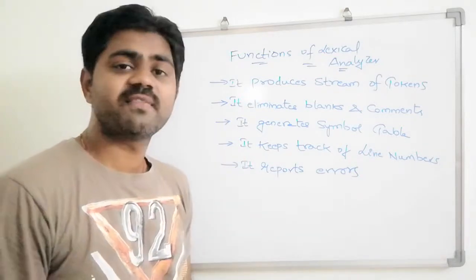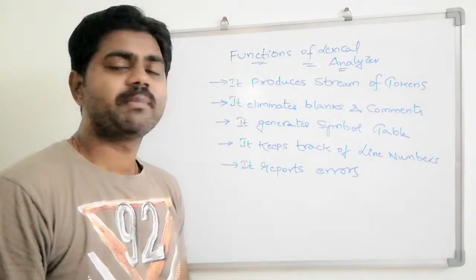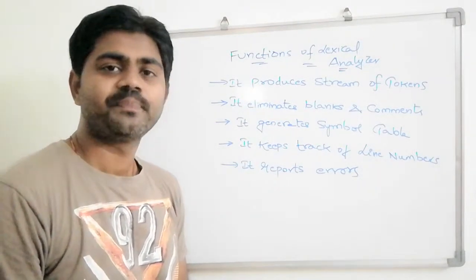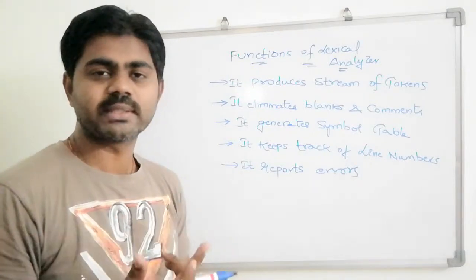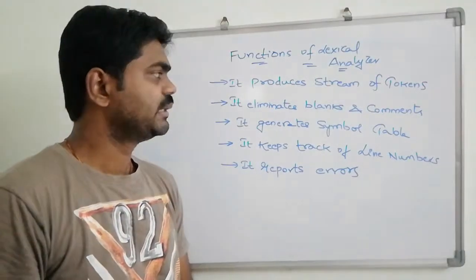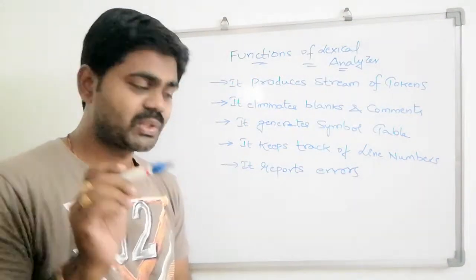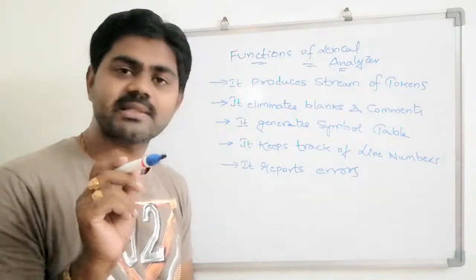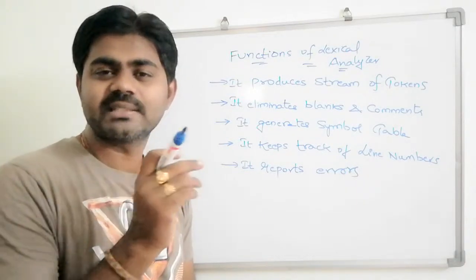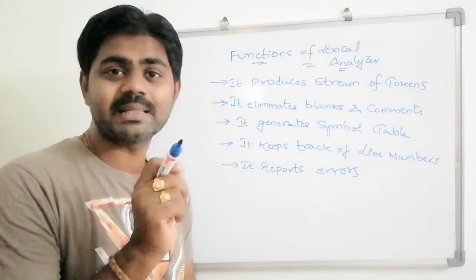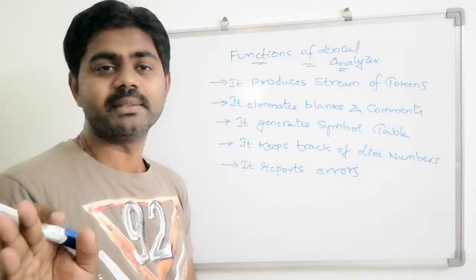First, it produces a stream of tokens by getting an input string and dividing it into groups of tokens. Second, it eliminates blanks and comments. Each input string is divided into tokens except blanks and comments, which are eliminated completely.